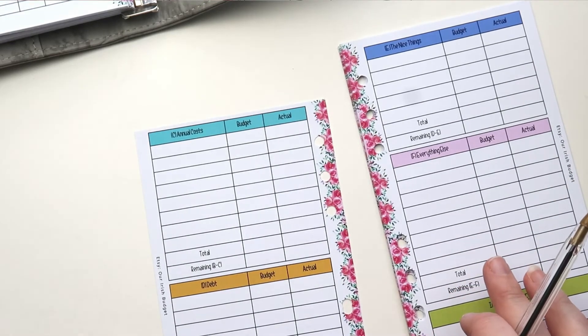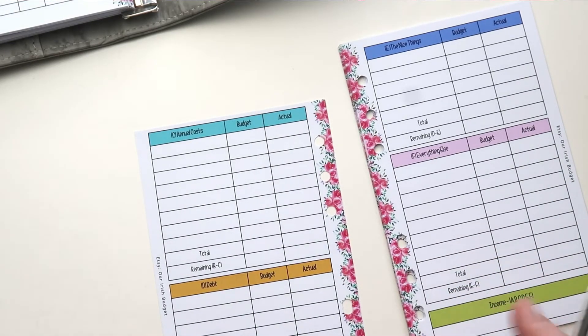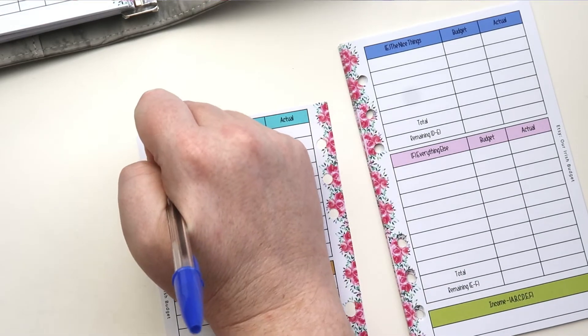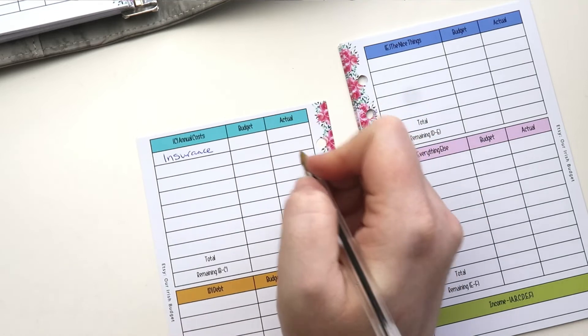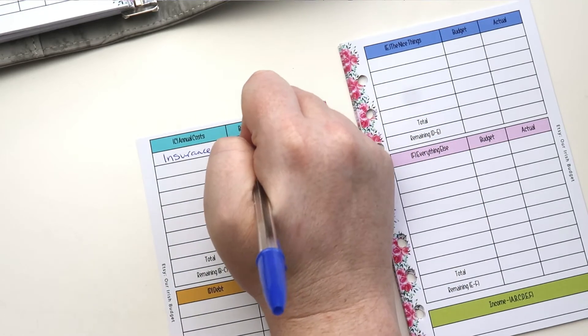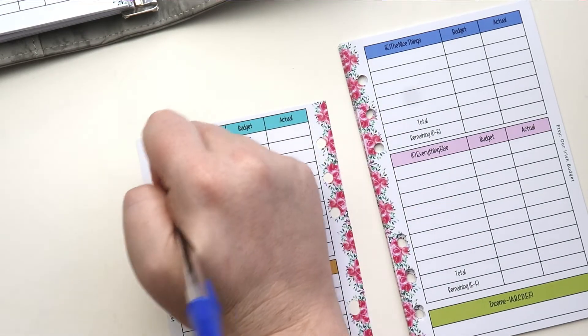Next off we have the annual costs. So these are things that come around every single year. We have insurance for our car and our motorbike. And we just have, again, a savings pot for that. And we put five euros into there.